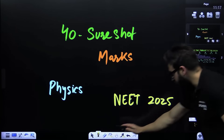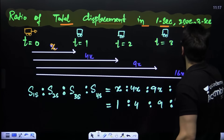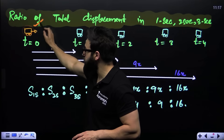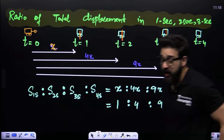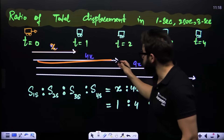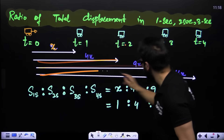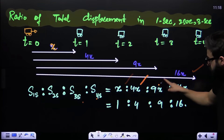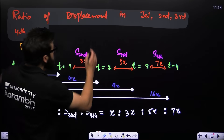The first topic: ratio of total displacement in the 1st, 2nd, 3rd second and so on. If a car has initial velocity zero and constant acceleration, displacement covered in 1 second is x, in 2 seconds it is 4x, in 3 seconds it is 9x, in 4 seconds it is 16x. So the ratio of total displacement is x : 4x : 9x : 16x, or 1 : 4 : 9 : 16. Extremely important.